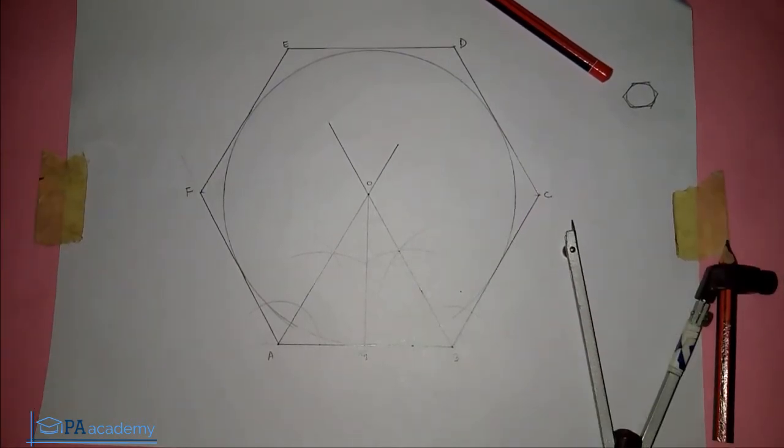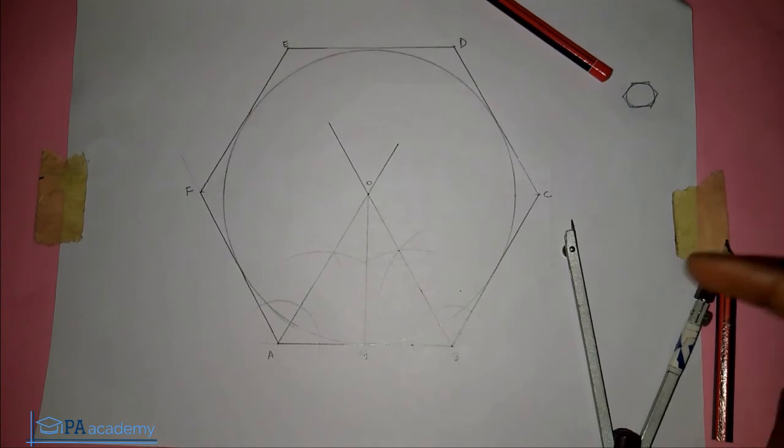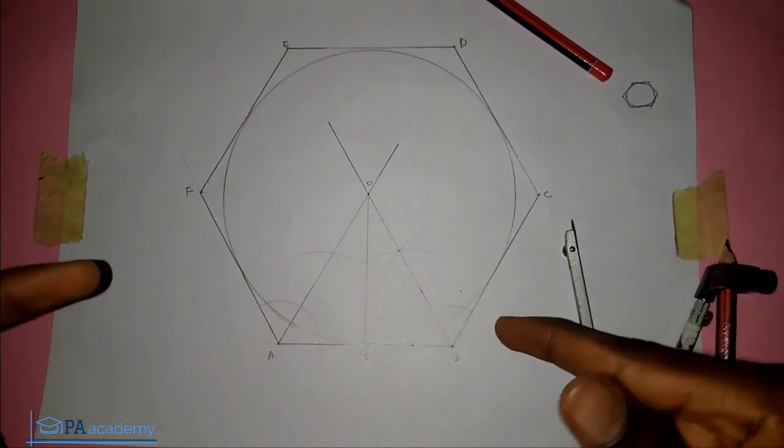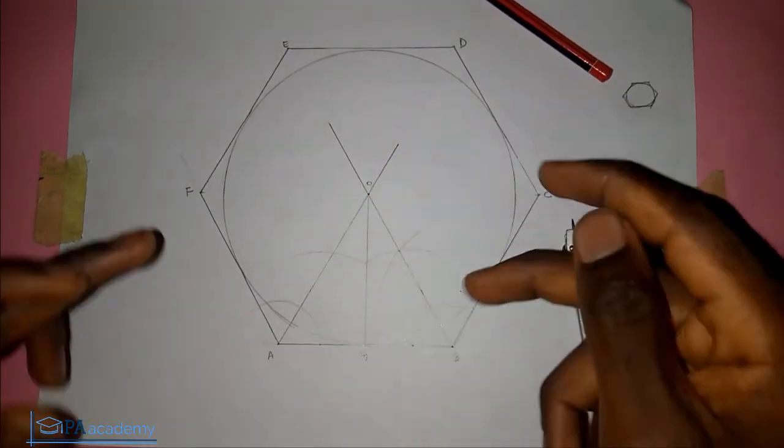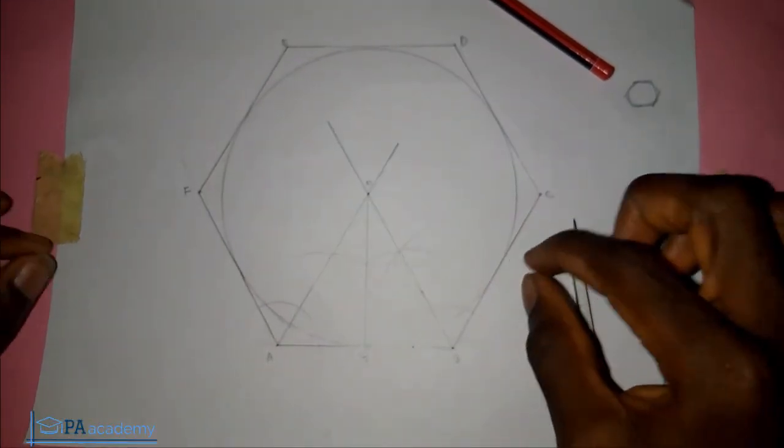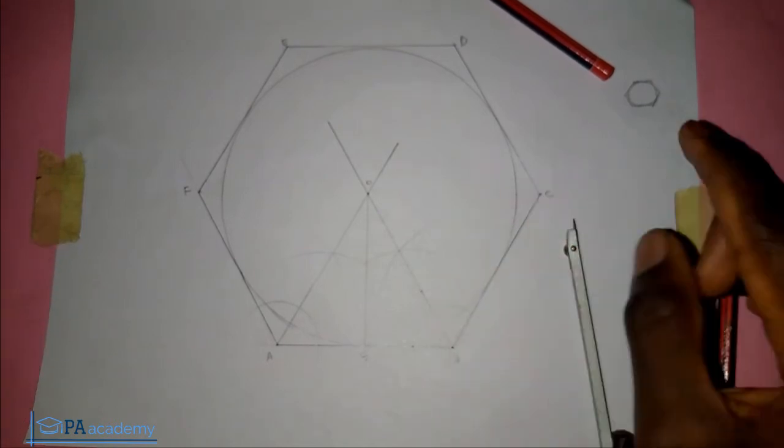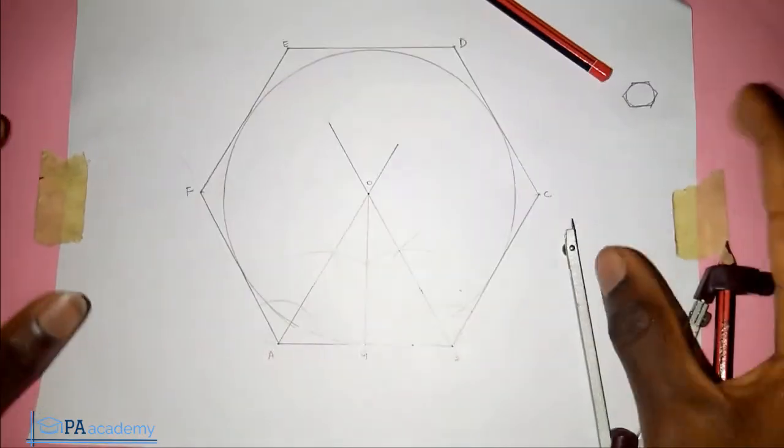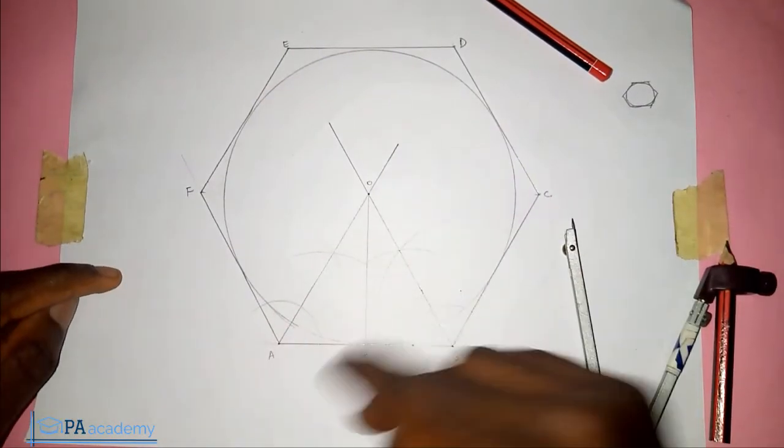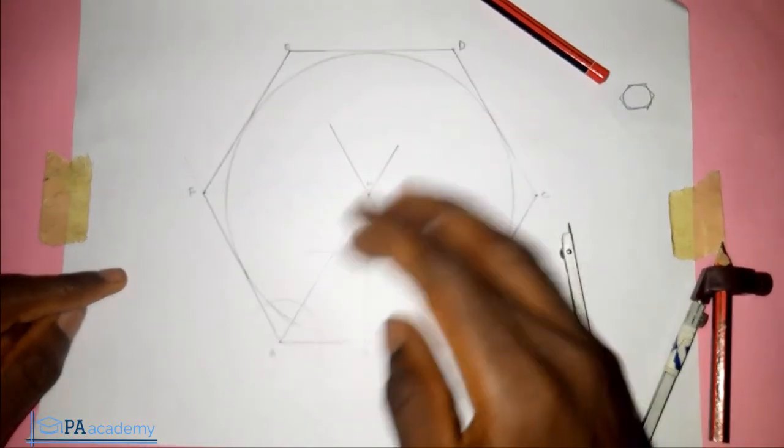This is how to inscribe a circle inside a hexagon. Don't forget the principle we applied here, whereby we just bisect any two angles in order to get the center of the circle. This principle applies to any other polygon, whether it is a heptagon, hexagon, or any number of sides. When you want to inscribe a circle, just bisect any two angles, you get the center, and then you are good to go.